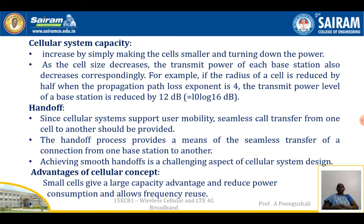Regarding cellular system capacity: by going for frequency reuse, the number of users — that is, the channel capacity — can be increased. The cellular system capacity is increased by making cells smaller and turning down the power. As the cell size decreases, the transmit power required to cover each base station also decreases correspondingly.